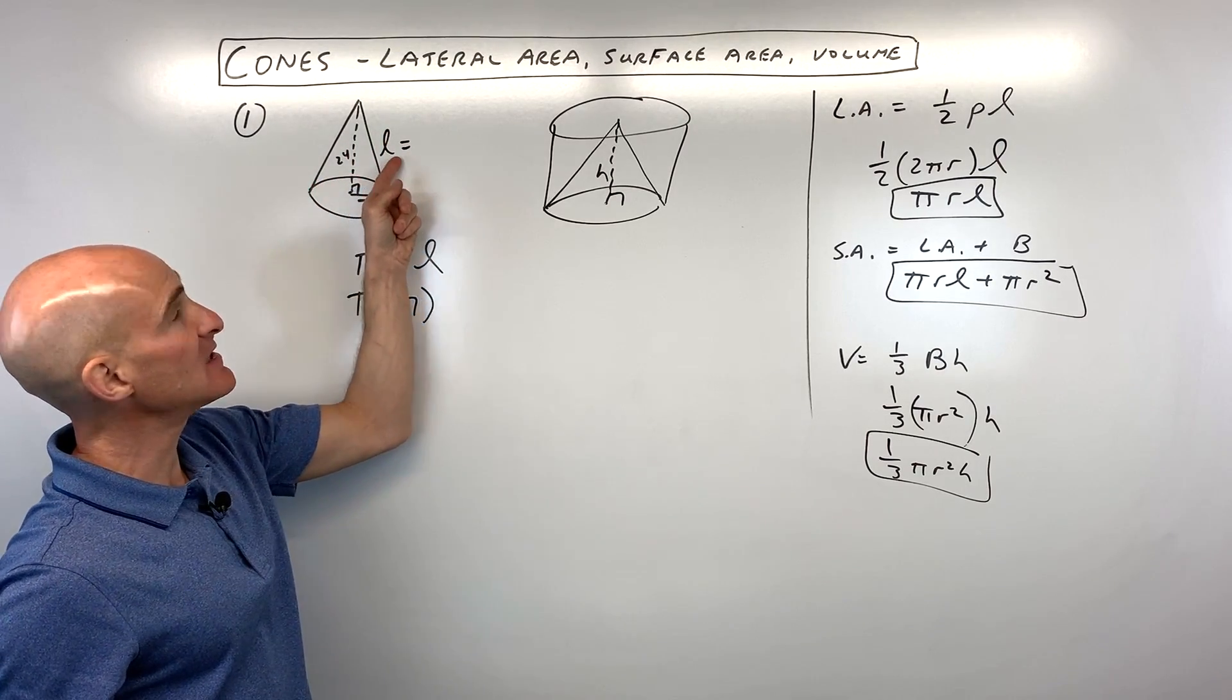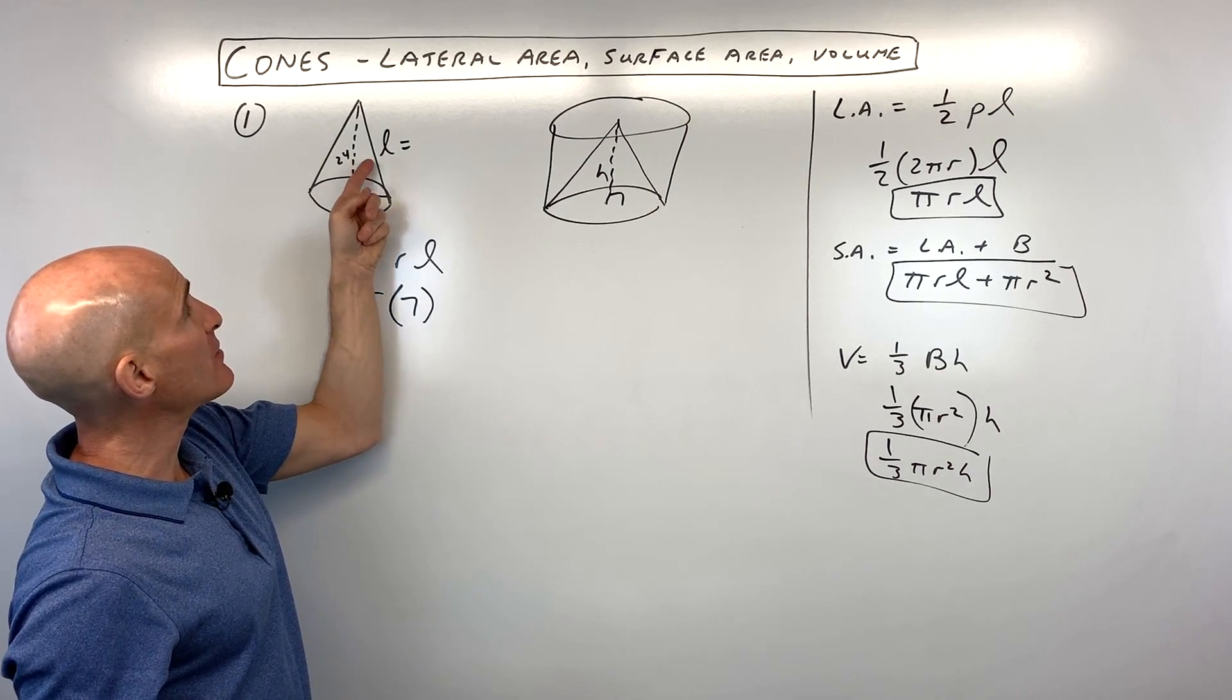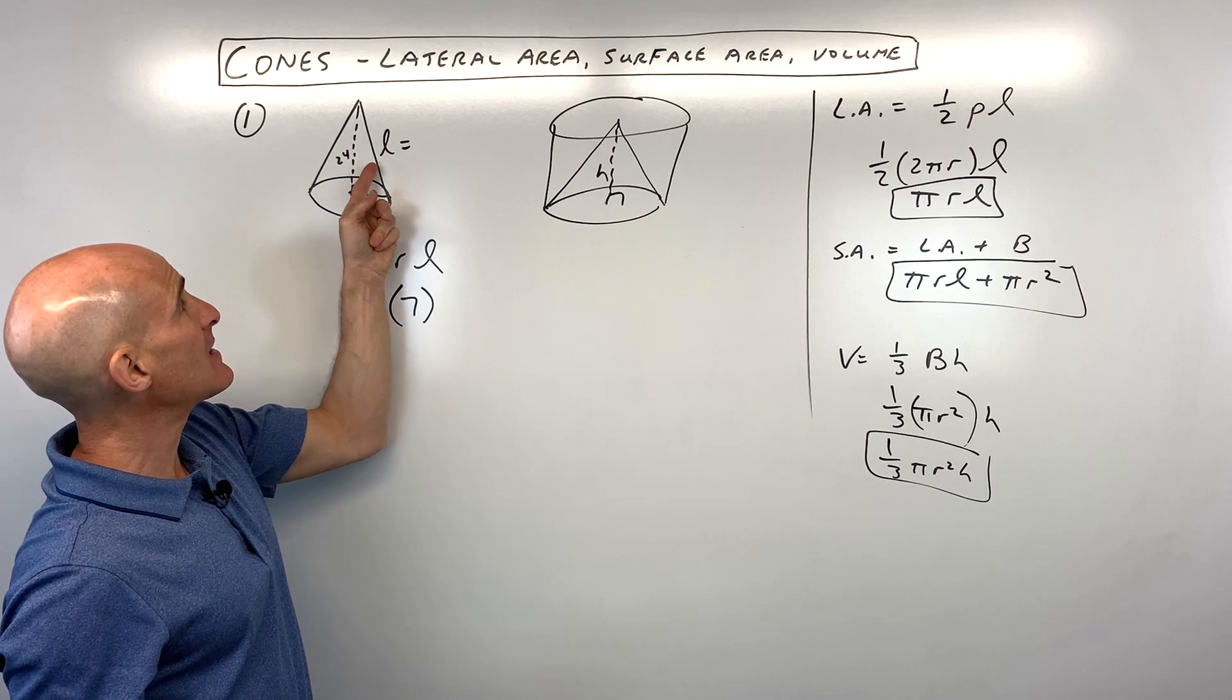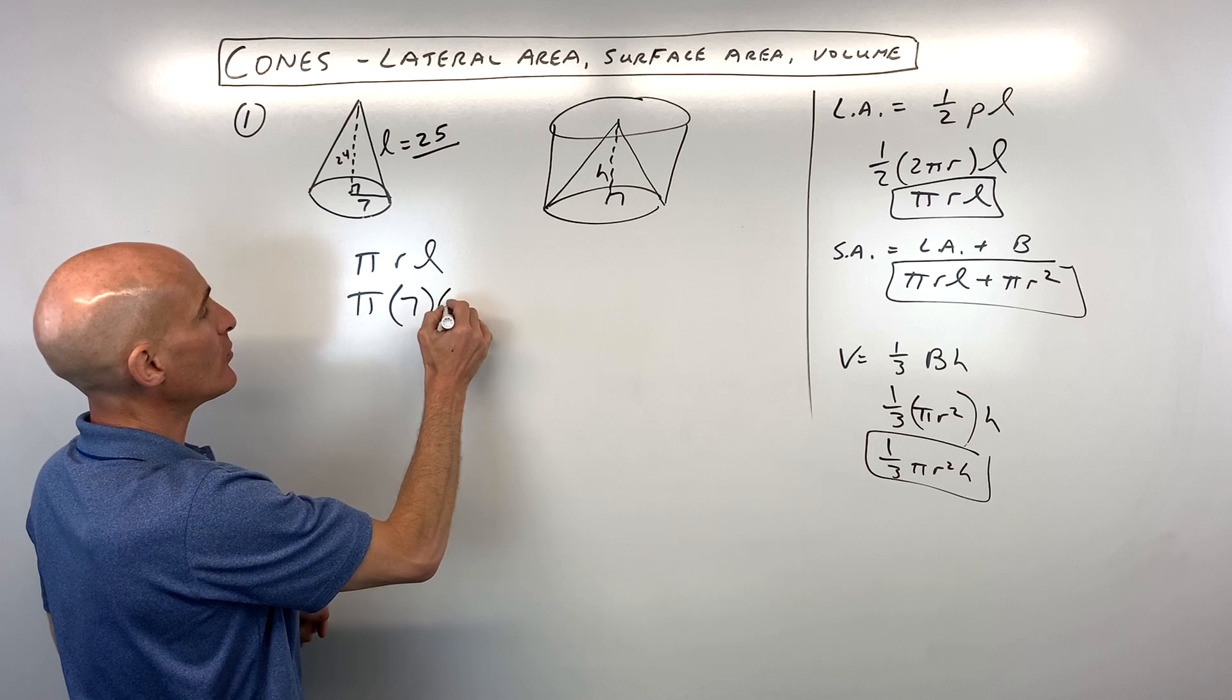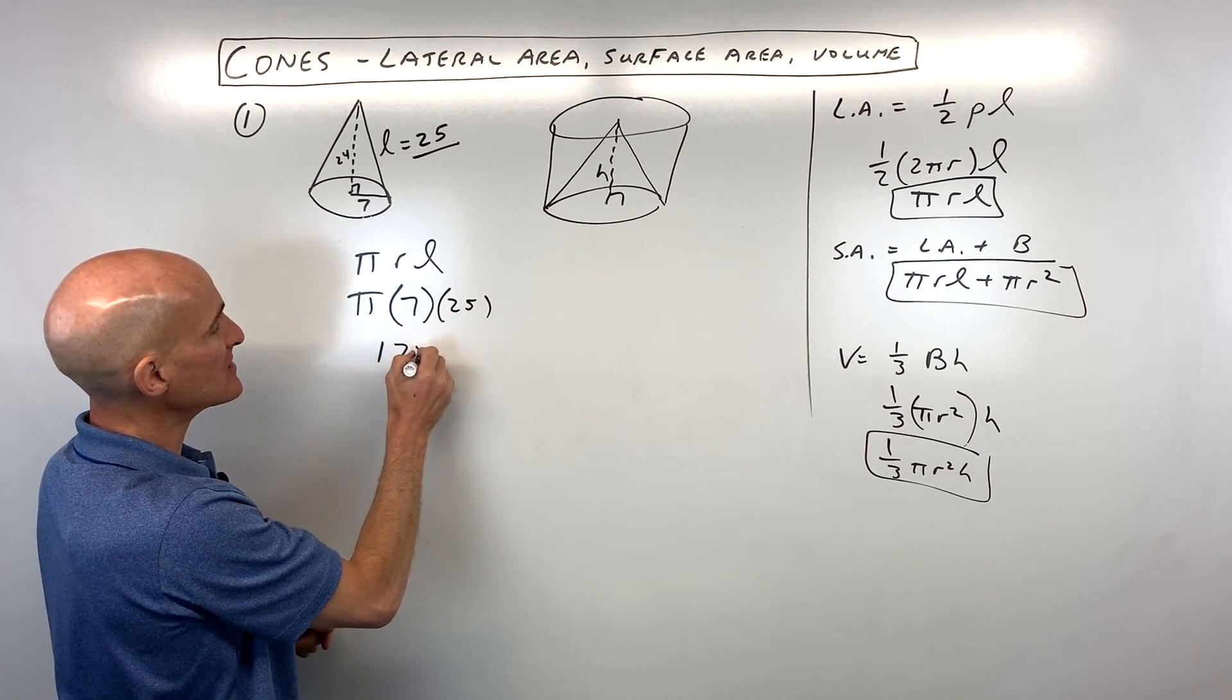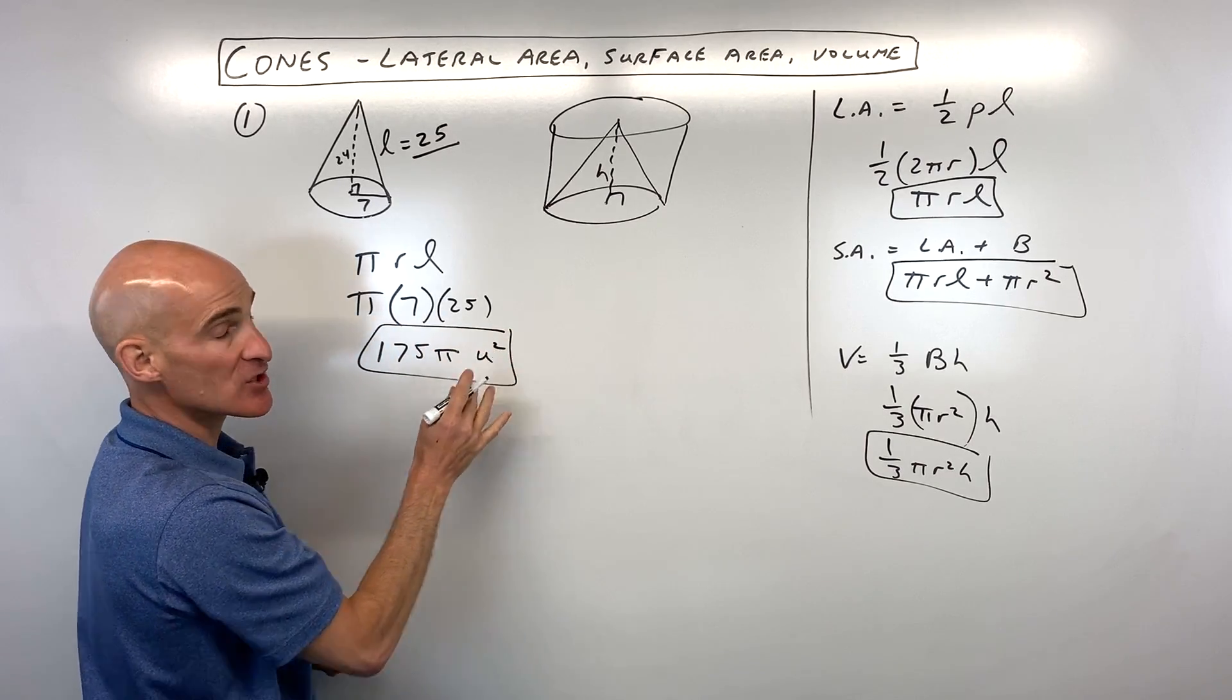In this particular problem, they didn't give us the slant height, but because we have a right triangle, we can do the Pythagorean theorem to find the slant height. Or if you recognize that this is a Pythagorean triple, it's a 7, 24, 25 Pythagorean triple. That's our slant height. So 7 times 25 is 175π units squared.